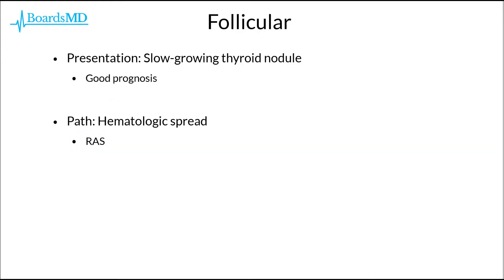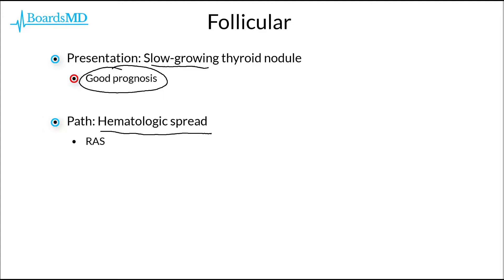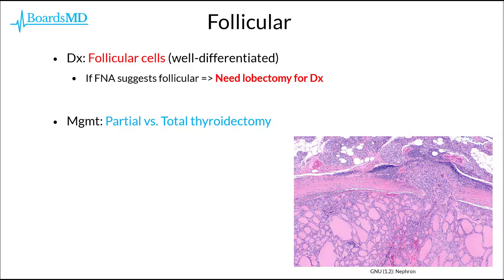Moving on to follicular carcinoma of the thyroid: this is once again going to present as a slow-growing thyroid nodule, and because this tends to be a slow-growing cancer, it tends to portend a good prognosis. Unlike papillary carcinoma of the thyroid, follicular carcinoma spreads via hematologic spread, and patients will have an increased risk if they have RAS mutations. Histopathologically, follicular carcinoma will show follicular cells under the microscope, which tend to be pretty well differentiated, albeit with a bit less organization and different sizes.